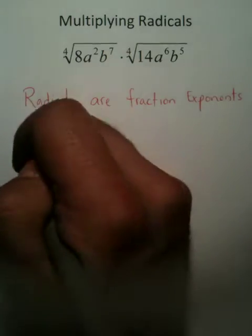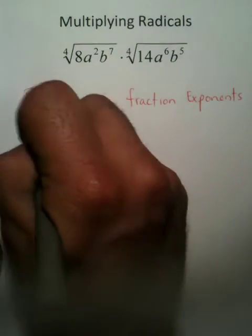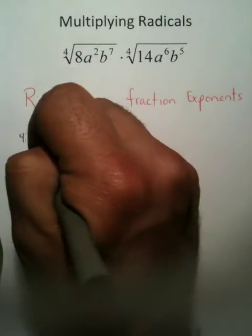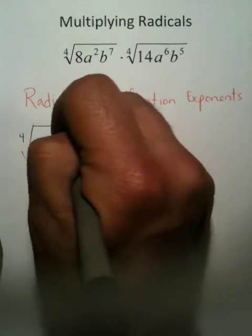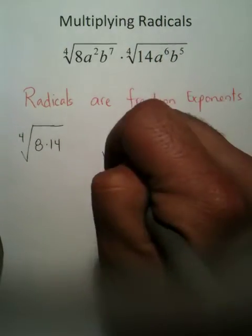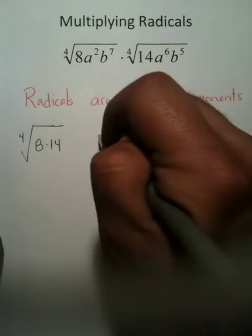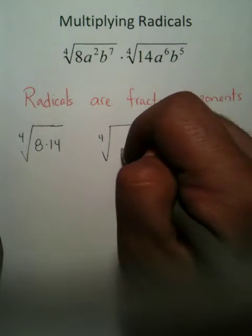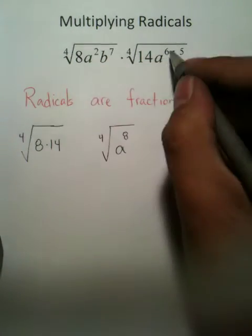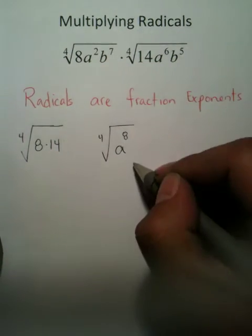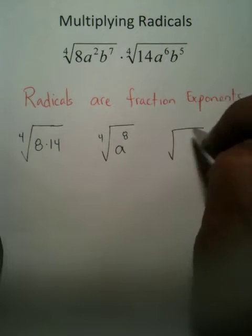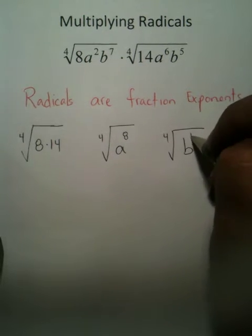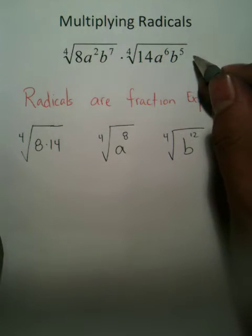Break it into three parts. Break it into a part where you easily have this index of 4, but the number 8 and the number 14 go here. Your index of 4 — combine the A's: 2 here, 6 here, 8 total. And your B's: 12 total because of the 7 and the 5.